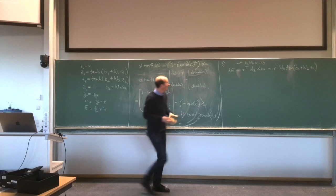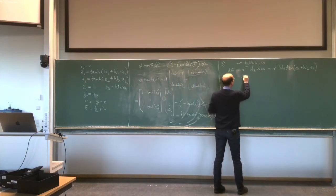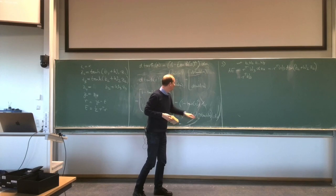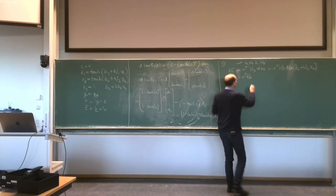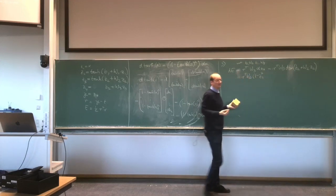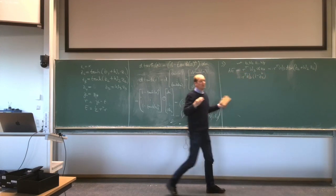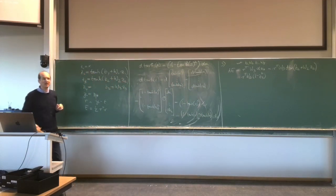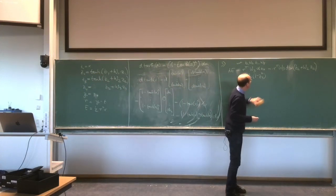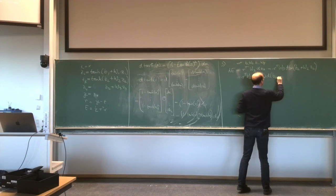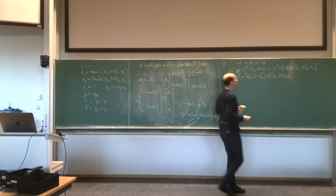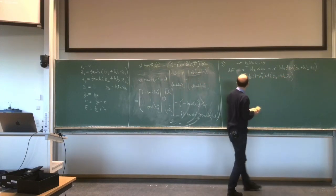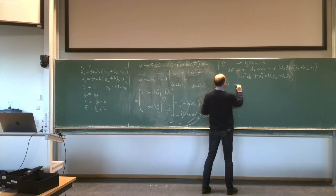Now we can apply this formula. It will be R-transpose W3 times (1 − Z3²) ⊙ d(B2 + W2 Z2). We have a name for that: it's (1 − Z3²), since Z3 was exactly tanh of that expression. Giving intermediate results names is nice because the formulas get shorter.